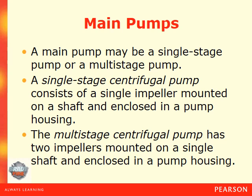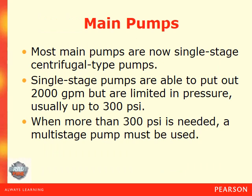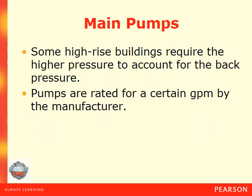A main pump may be a single stage or multi-stage pump. A single stage centrifugal pump consists of a single impeller mounted on a shaft and enclosed in a pump housing. The multi-stage centrifugal pump has two impellers mounted on a single shaft. Most main pumps are now single stage centrifugal type pumps. Single stage pumps are able to put out 2,000 gallons per minute but are limited in pressure, usually up to 300 psi. When more than 300 psi is needed, a multi-stage pump must be used. Some high-rise buildings require the higher pressure to account for back pressure.